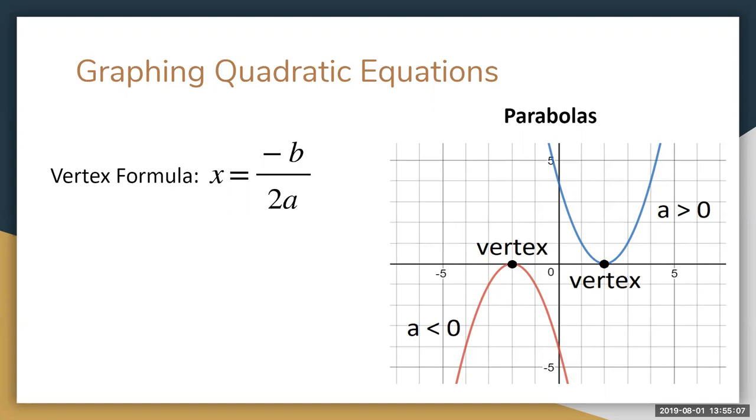You can easily tell which type you have by looking at the equation and identifying the sign of the a term, that is, the number with the x². If a is positive, it opens upwards; if negative, it opens down.